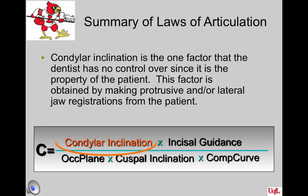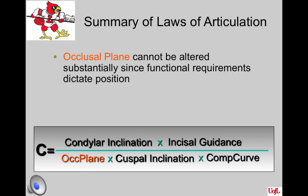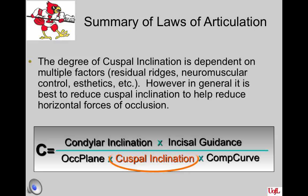First, condylar inclination is one factor that the dentist has no control of — it is a property of the patient, obtained by making protrusive and/or lateral jaw registrations. Second, it is suggested that incisal guidance for the complete denture patient be minimized within the confines of aesthetics and phonetics in order to reduce the horizontal forces of occlusion. Third, the occlusal plane cannot be altered substantially since functional requirements dictate its position, and it is usually kept relatively parallel to the denture base foundation.